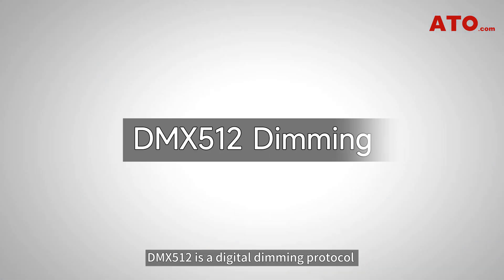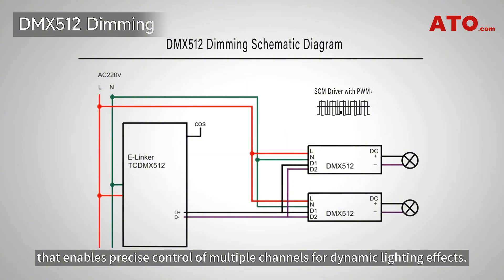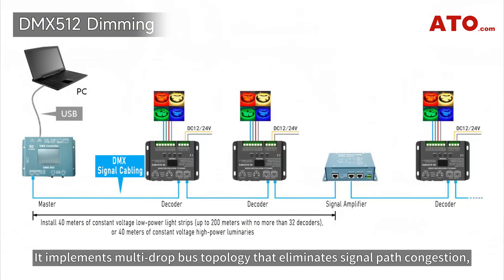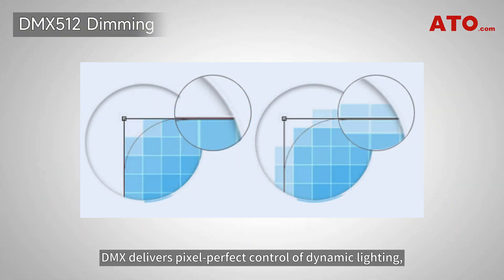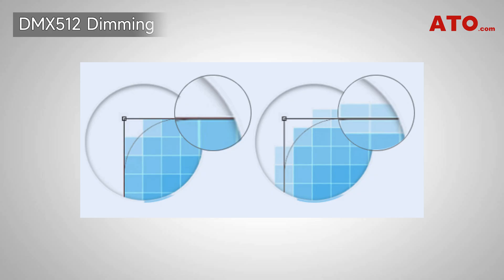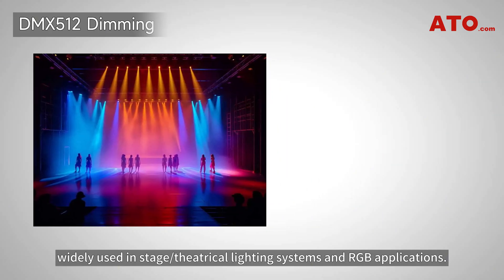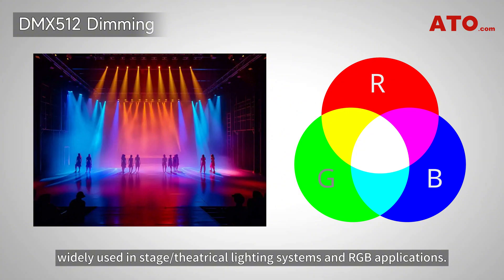DMX 512 is a digital dimming protocol that enables precise control of multiple channels for dynamic lighting effects. It implements multi-drop bus topology that eliminates signal path congestion, making it suitable for master-slave control systems with simple wiring and high reliability. DMX delivers pixel-perfect control of dynamic lighting, widely used in staged theatrical lighting systems and RGB applications.